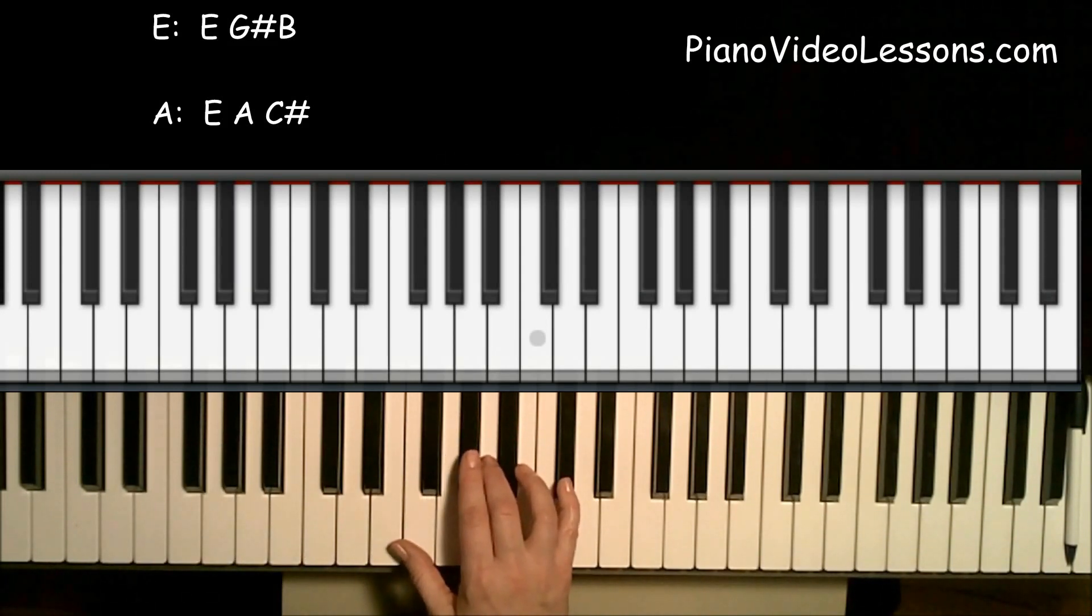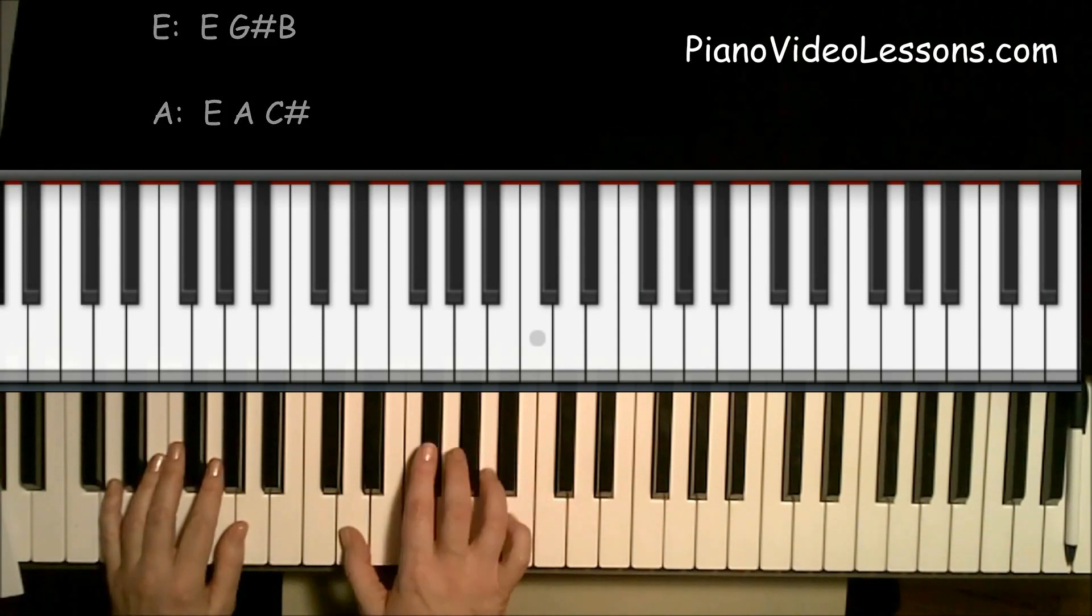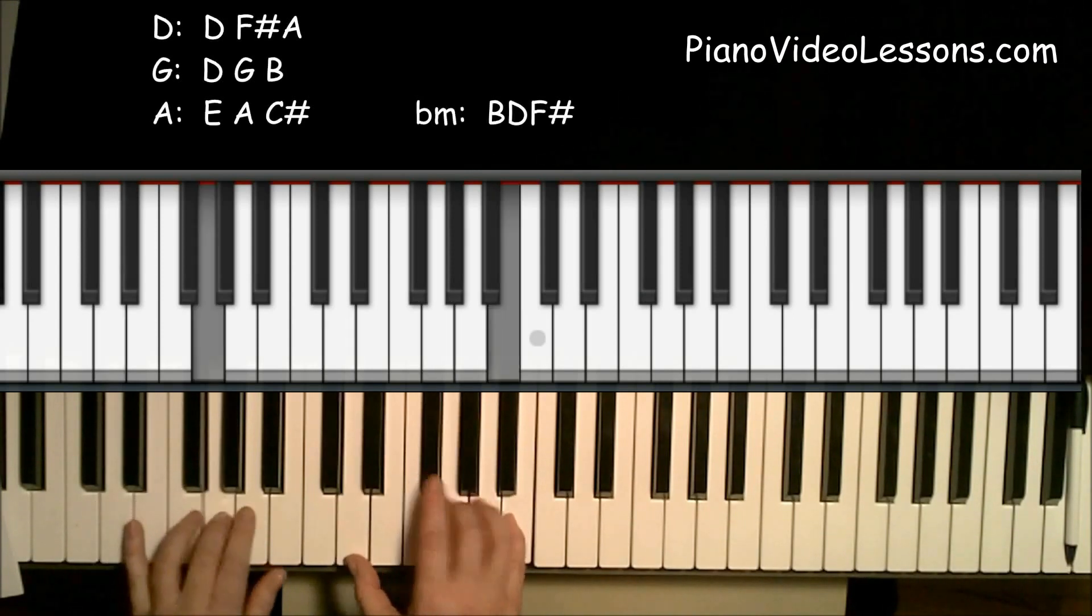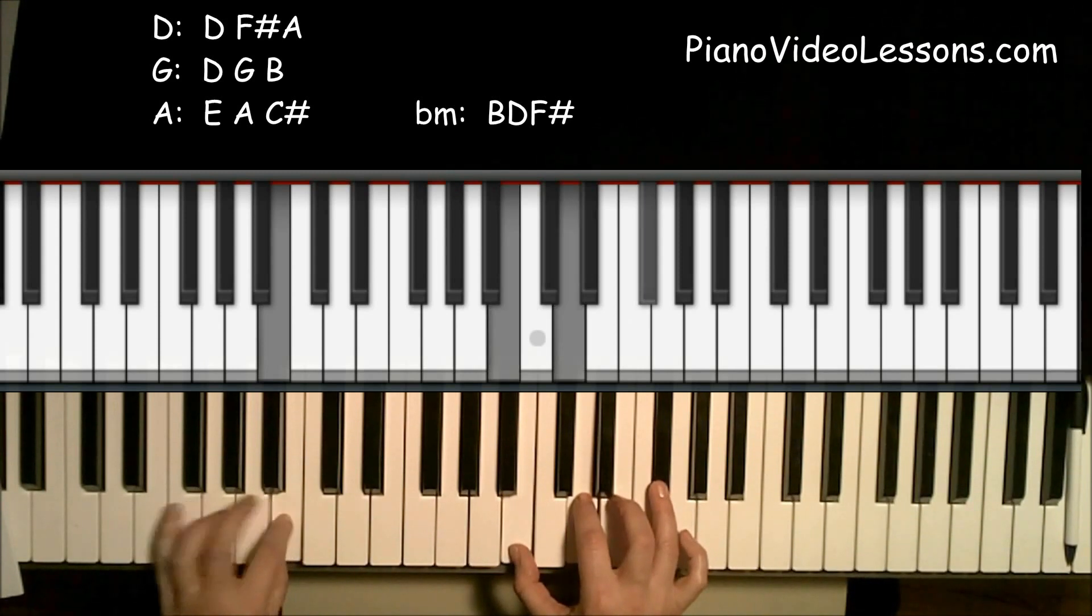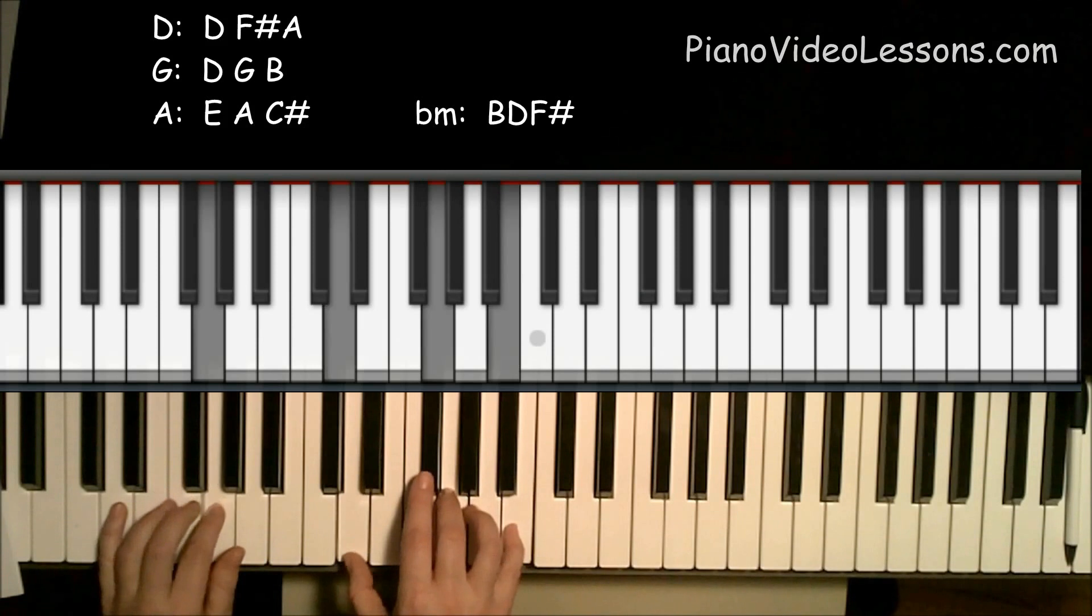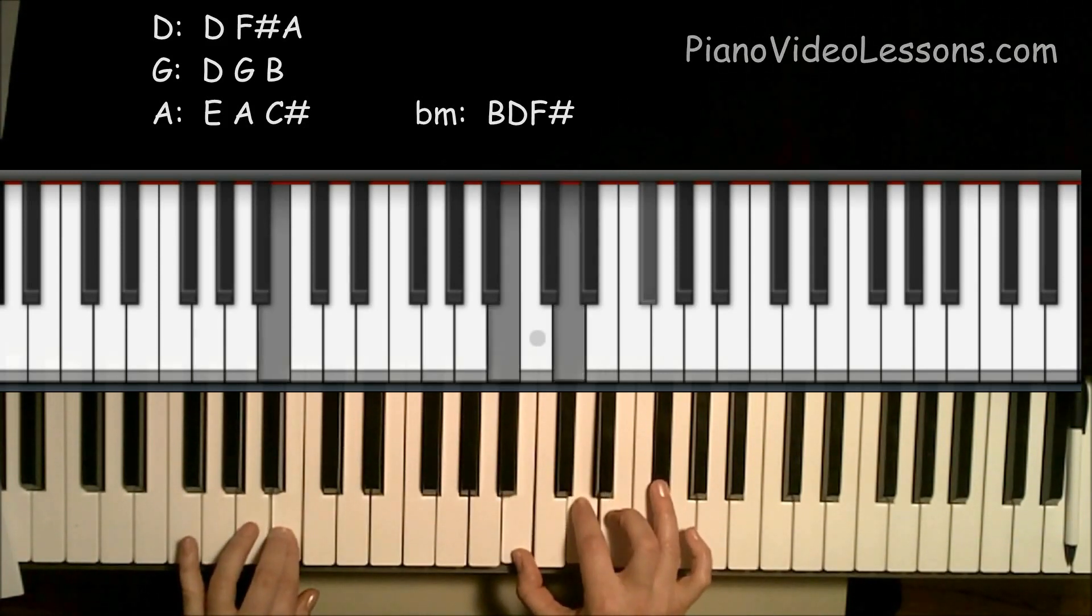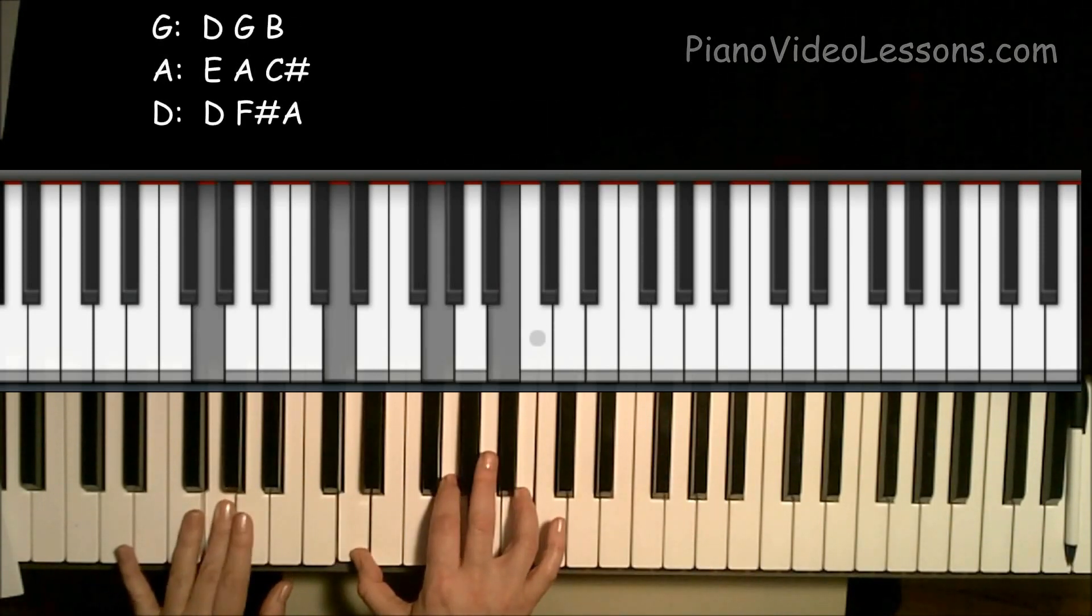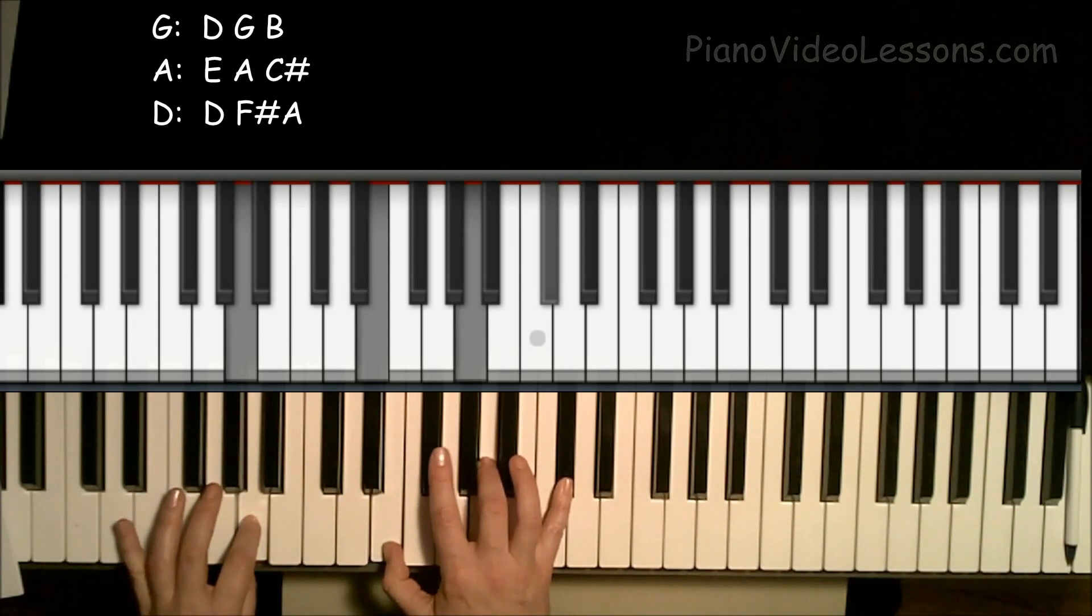And then we go into the part where they sing, summer fling, don't mean a thing. So that part goes like this. Summer fling, don't mean a thing. But, so that was just D again to G, to A and then B minor. B, D, F sharp. But, oh, G. Oh, those summer, A nights.